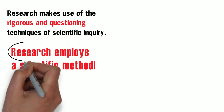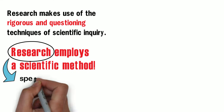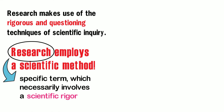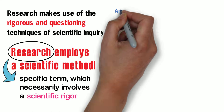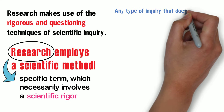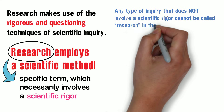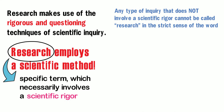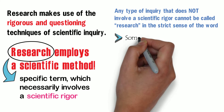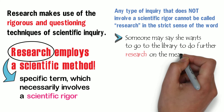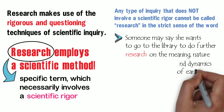Research is a specific term which necessarily involves a scientific rigor. For this reason, any type of inquiry that does not involve a scientific rigor cannot be called research in the strict sense of the word, such as the mere act of gathering facts and information. For instance, someone may say she wants to go to the library to do further research on the meaning, nature, and dynamics of earthquakes.